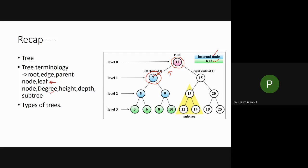Degree means how many branches are connected to a particular node. For example, node 5 has two branches connected, so its degree is two. Similarly, the root node has two branches - left and right - so its degree is also two.